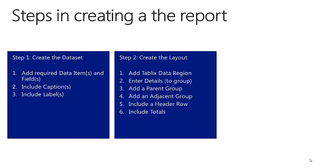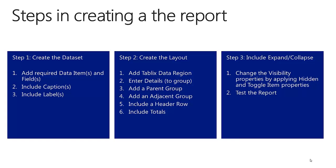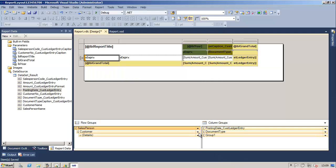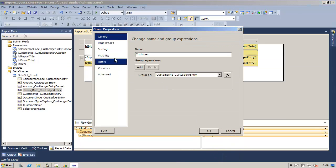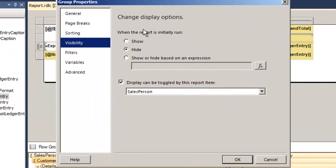We started by adding the TableX data region and then the fields — the amount from customer ledger entry — that need to be grouped as details. Next we added the parent group, some adjacent groups to enable totals, the header row and subtotals into the TableX control. The next step is to include expand-collapse functionality by changing the visibility properties and applying hidden and toggle item properties on the correct fields. We will go into the properties of the customer group and enter the visibility options. When the report is initially executed we will hide the row and the display will be toggled by the report item containing the salesperson.